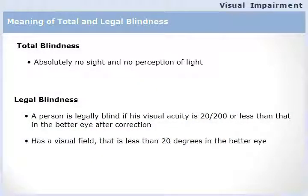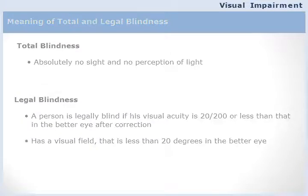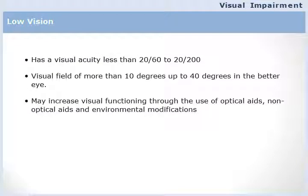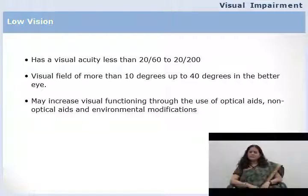A person is called legally blind because if they fall in that category, they are entitled to all legal concessions meant for the visually impaired. The majority of visually impaired people fall in the category of low vision. According to WHO, a low vision person has a visual acuity between 20/60 and 20/200, and a visual field of more than 10 degrees up to 40 degrees in the better eye.